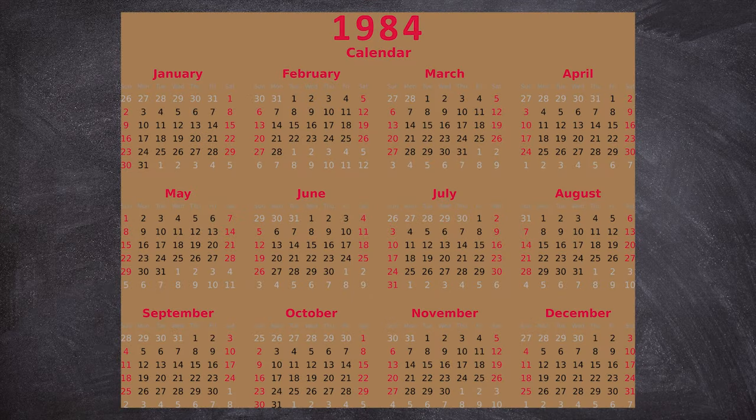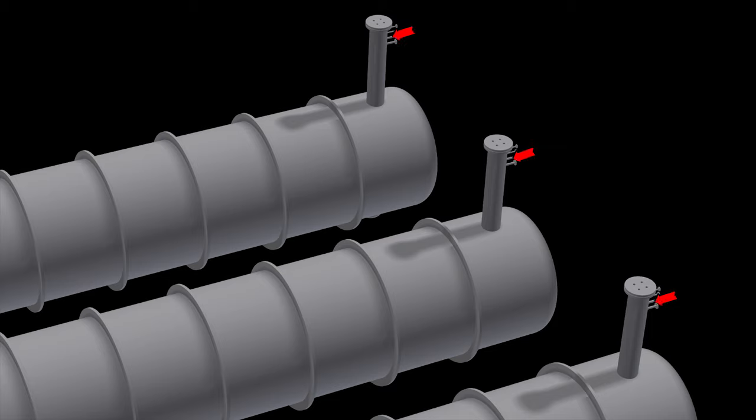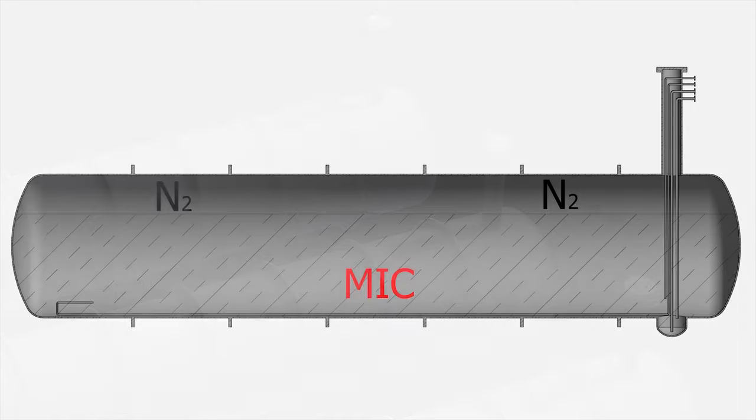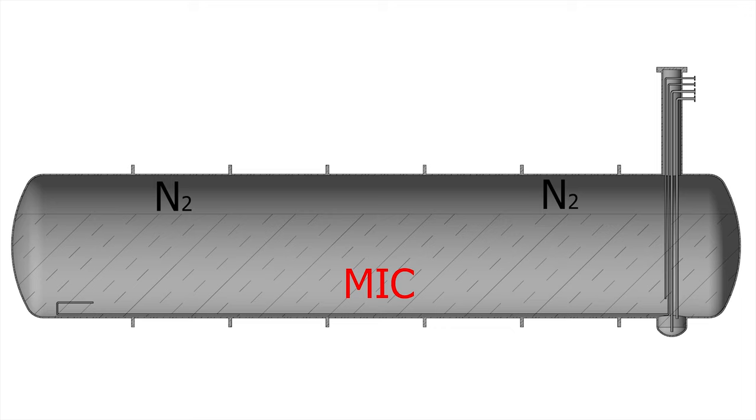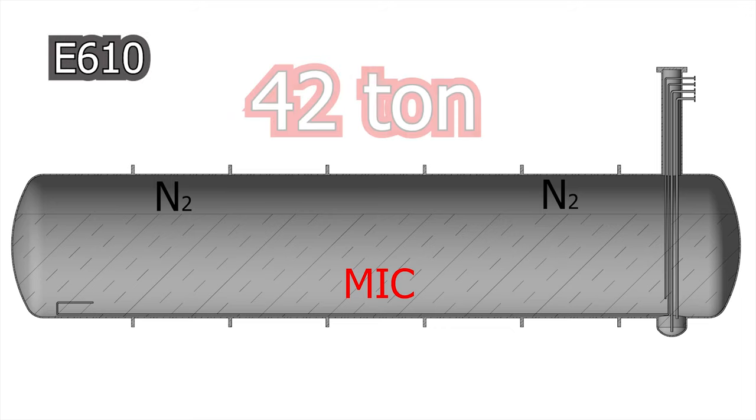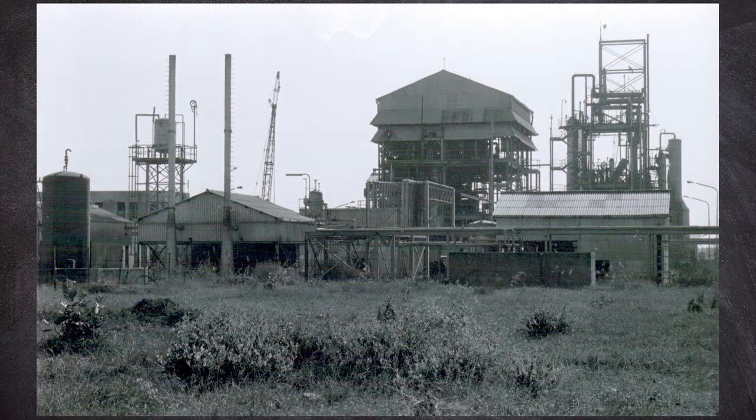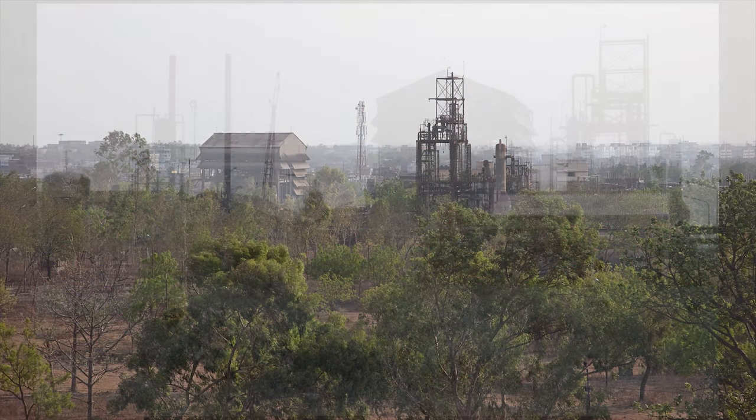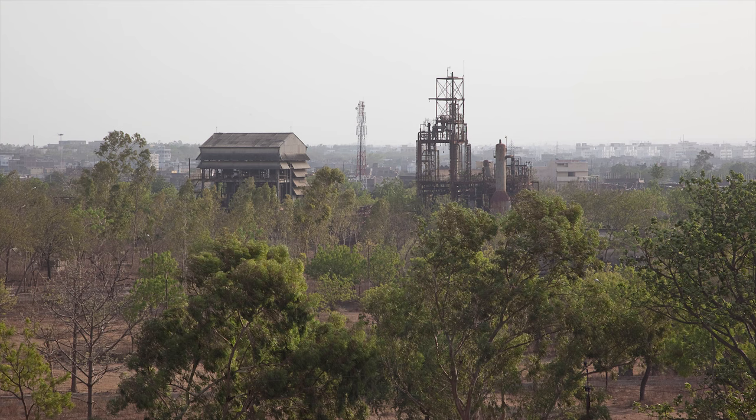Months before the tragedy, the production of MIC was in progress and was being filled in the tanks. As per the rules, no tank was allowed to be filled with more than 30 tons of liquid MIC. But the E-610 tank held 42 tons. This problem forced Union Carbide to halt producing MIC at the Bhopal facility, and parts of the plant were shut down for maintenance.